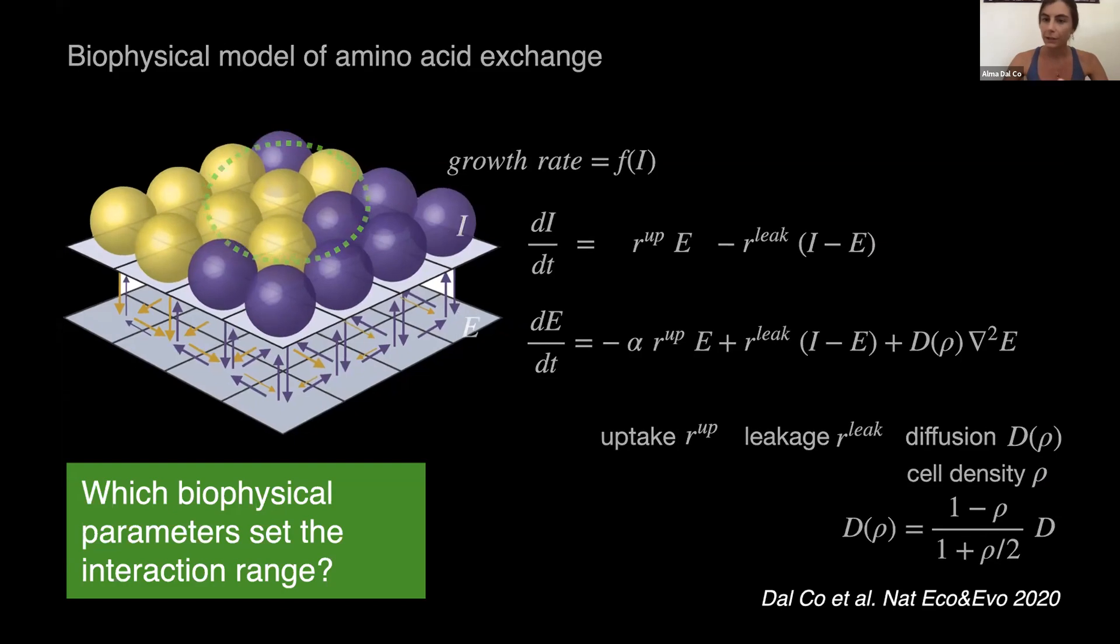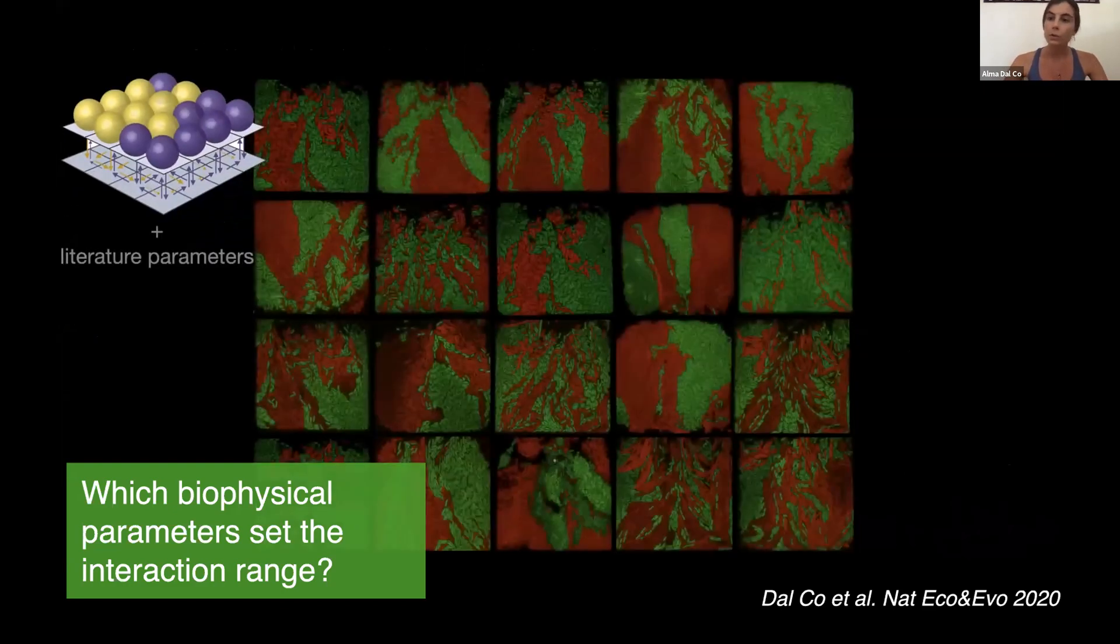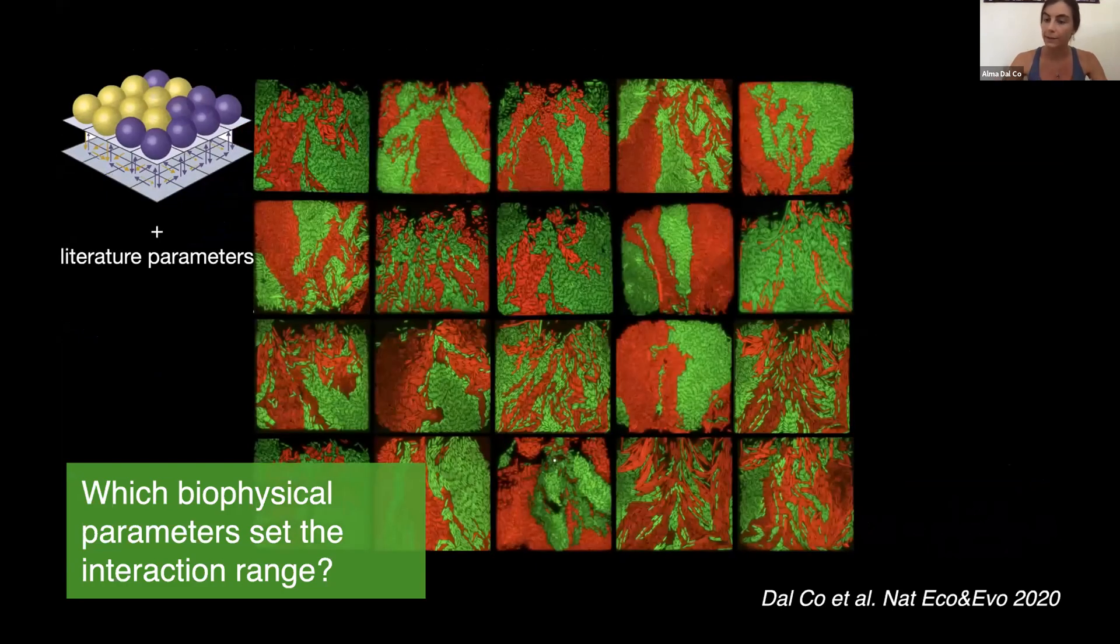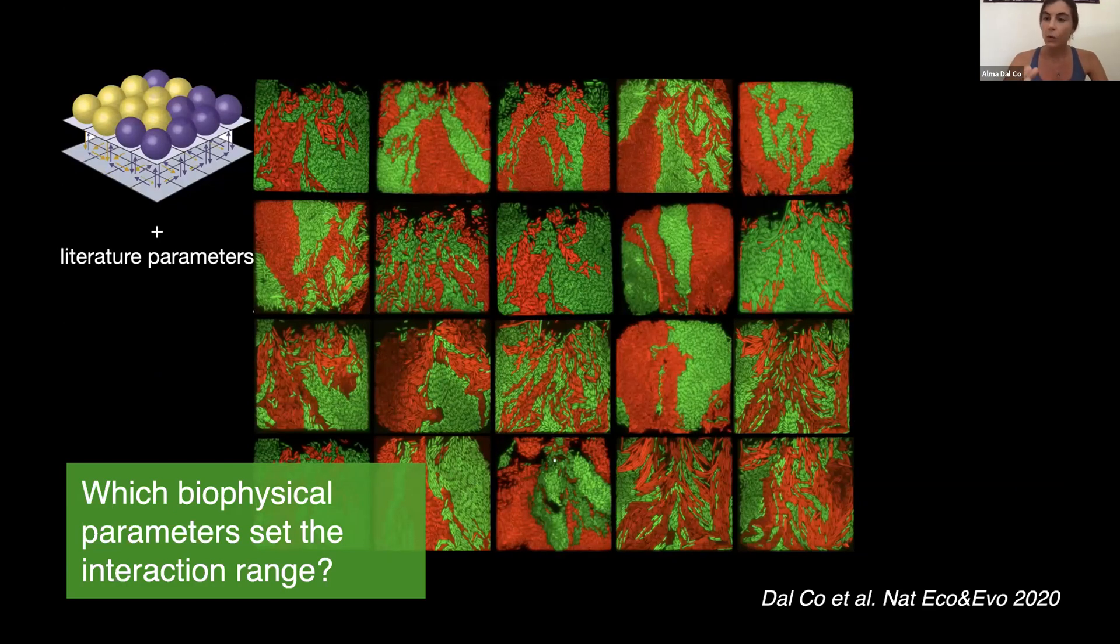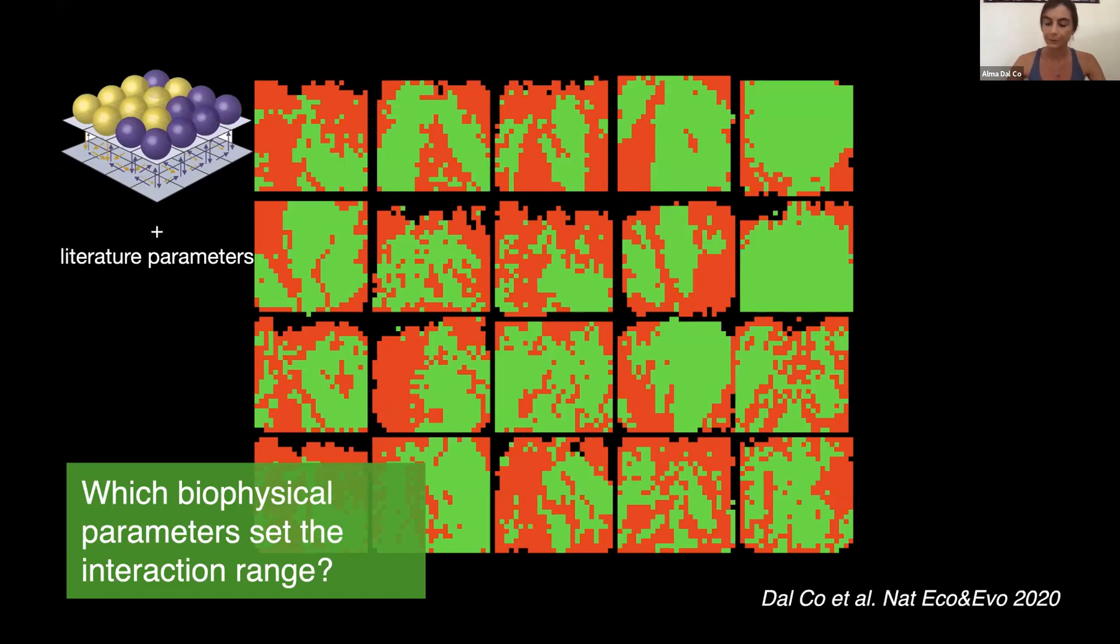So the first thing we did to check the validity of our model was to apply literature parameters from the two amino acids that our communities exchange, arginine and proline, and see whether applying this model to our real configuration, the real arrangement we measure in the lab, whether we can predict the cell's growth rate and the interaction range that we measured experimentally. So what we did is that we took many replicate communities, we simplified the arrangements, and we calculated the landscape of amino acids using our model. And from that, we can estimate the growth rate of cells.